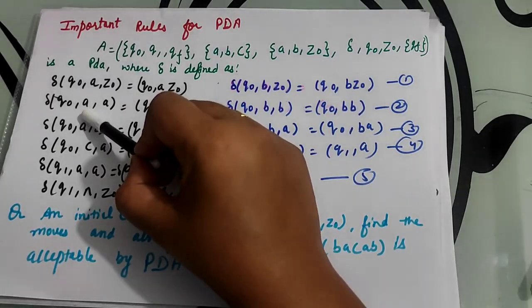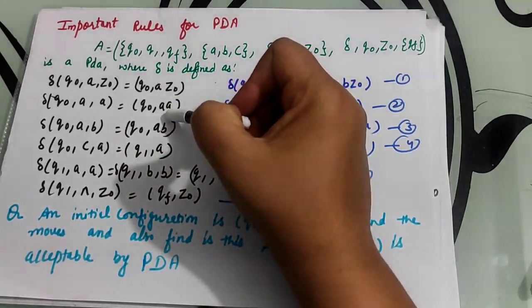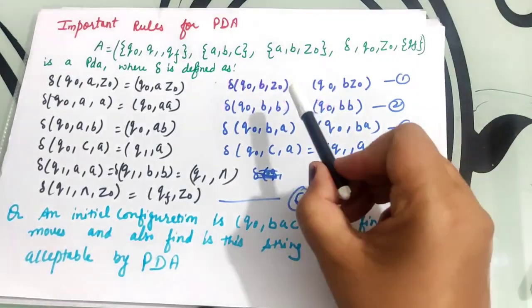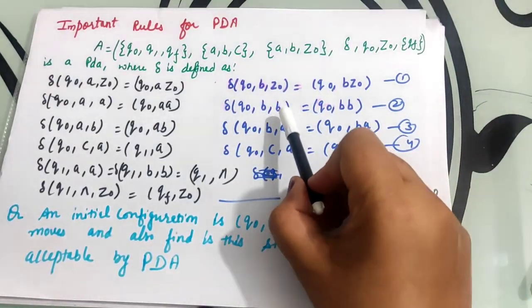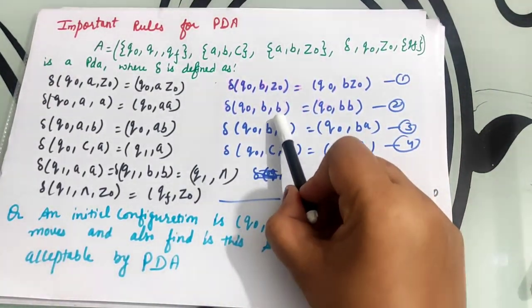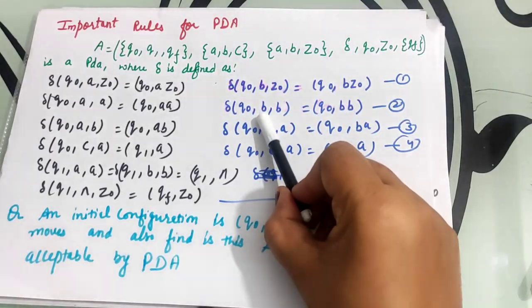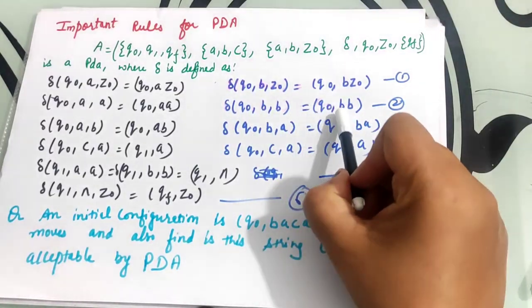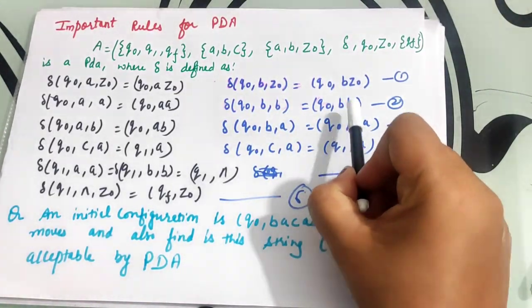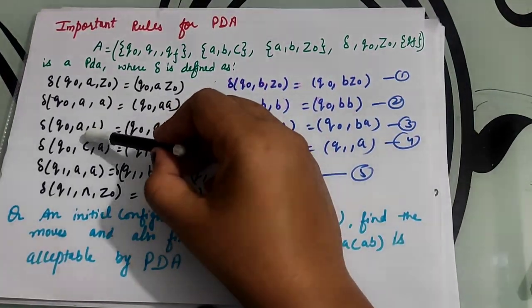If 'a' is already in the stack and you want to insert 'a', then push it into the stack and the stack will have 'aa'. Same for 'b': if 'b' is already in the stack and you want to insert 'b', then push it into the stack and here the stack will have 'bb'.